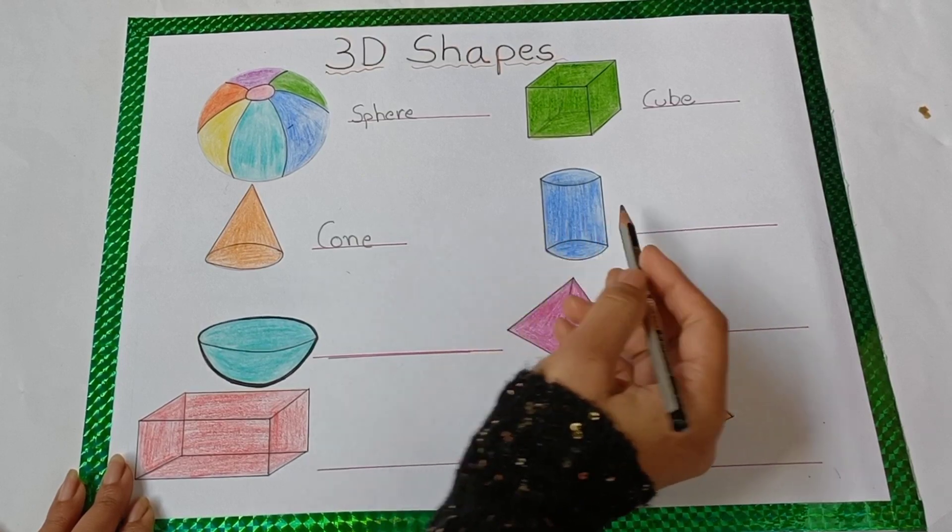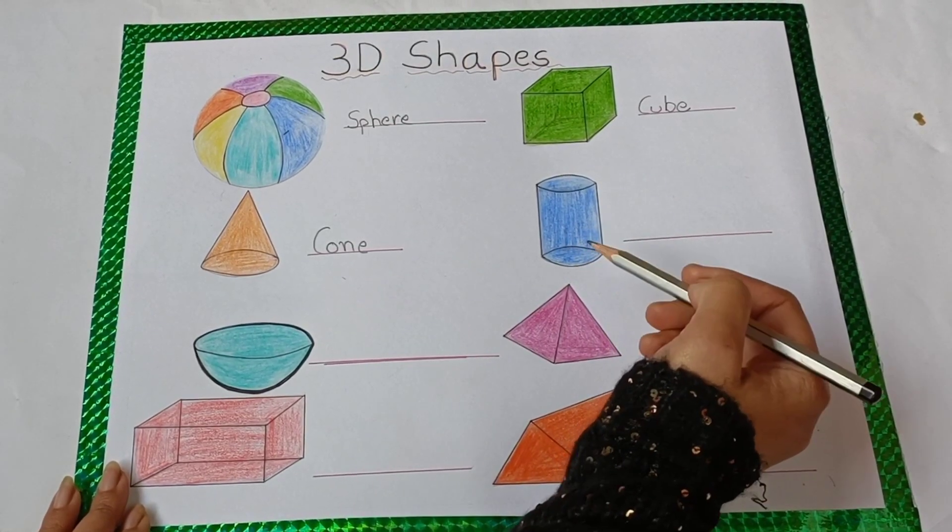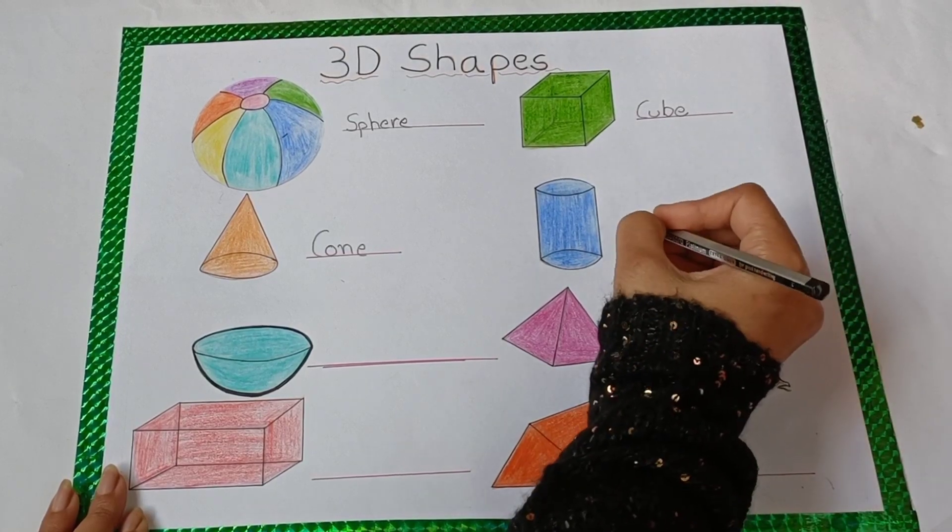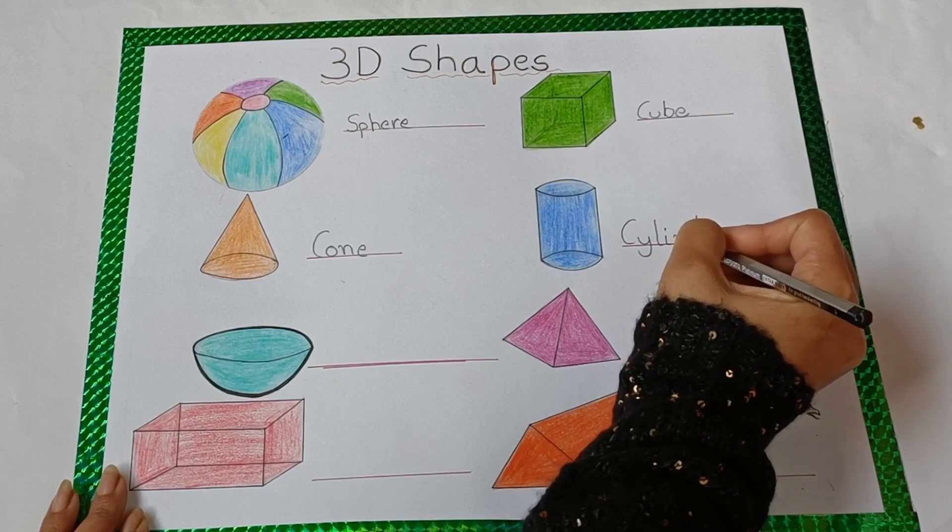The next shape is cylinder shape. This is a cylinder shape. So right here, C-Y-L-I-N-D-E-R. Cylinder.